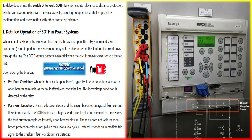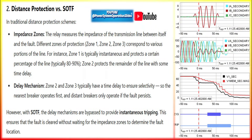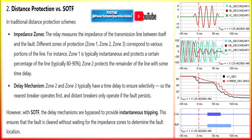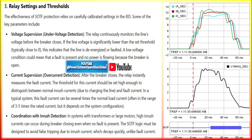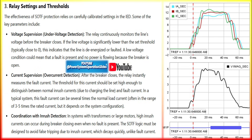For breaker closure detection, the relay detects when the circuit breaker is about to be closed using breaker status contacts or auxiliary contacts. At this point, the relay prepares for potential fault detection. Once the breaker closes, the relay looks for a sudden spike in current. If the current exceeds a preset threshold — much higher than normal load current — it assumes that the breaker has closed onto a fault. The SOTF function then bypasses normal protection settings like time delays or zone coordination and sends an immediate trip signal to isolate the faulted line.